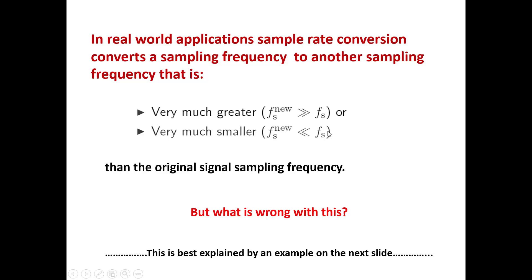Where fs is the original sampling frequency and fs superscript 'new' is the new sampling frequency that we want. This is the situation, but what is the problem? I will explain the kind of problem this creates in implementation on the next slide.